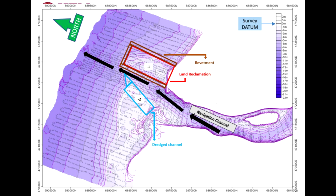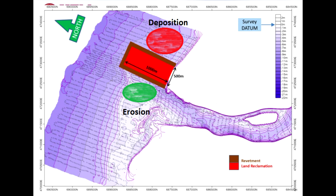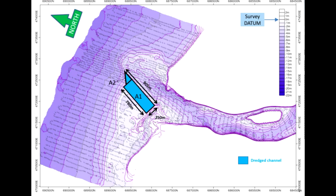The brown U-shaped block represents the revetment position. This revetment will cause the green part to undergo erosion and the red part to undergo deposition, so no sediment will be deposited at the green part. The blue block represents where dredging will occur, removing sediment to make the navigation channel deeper.